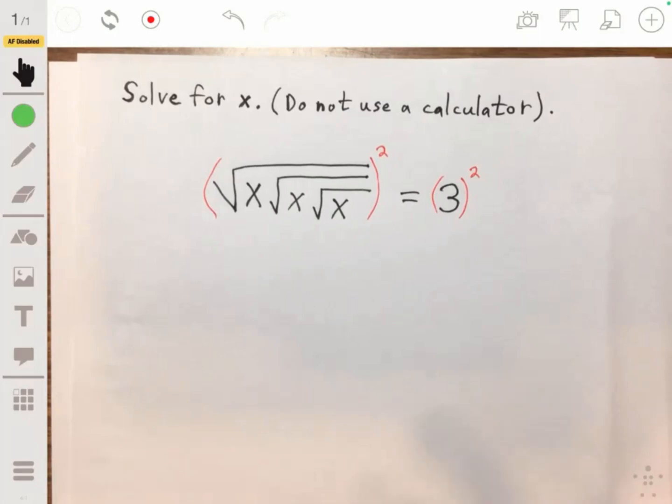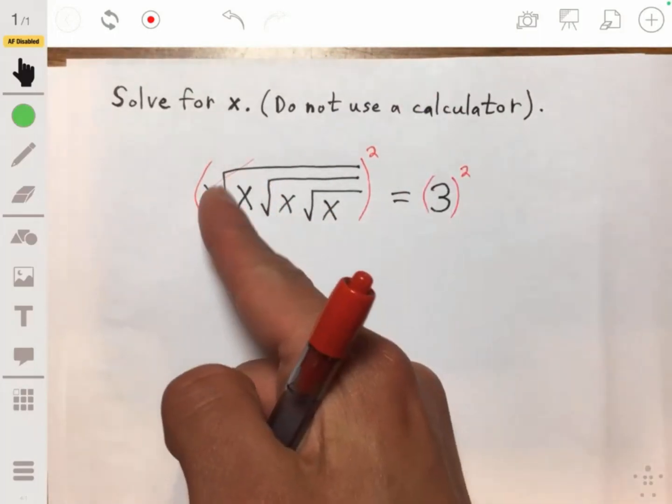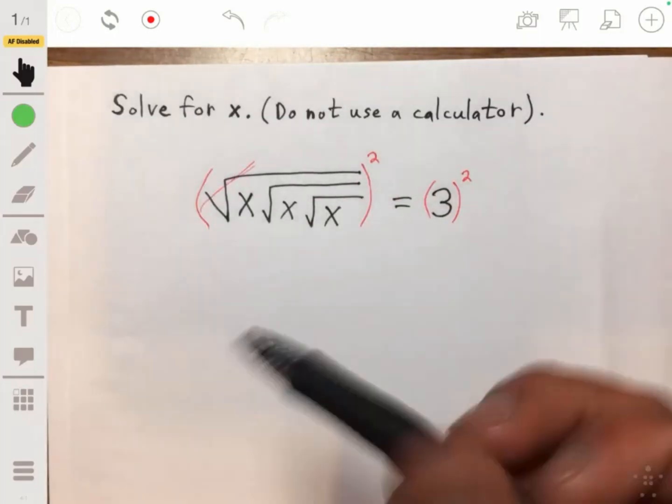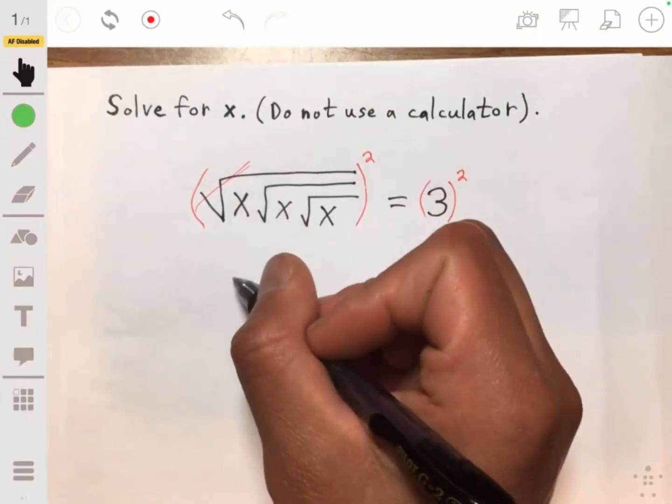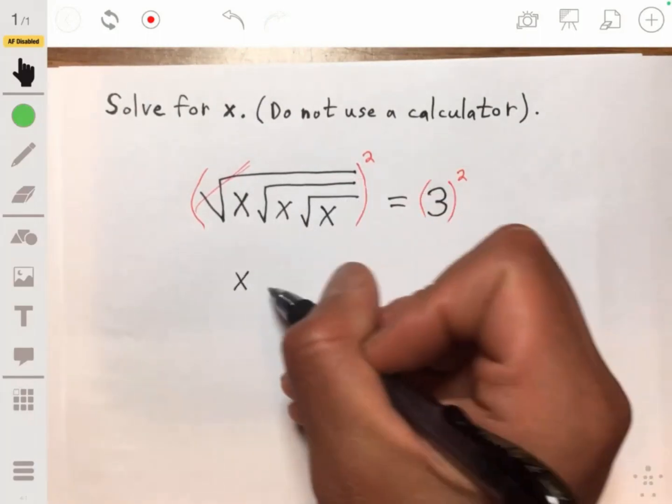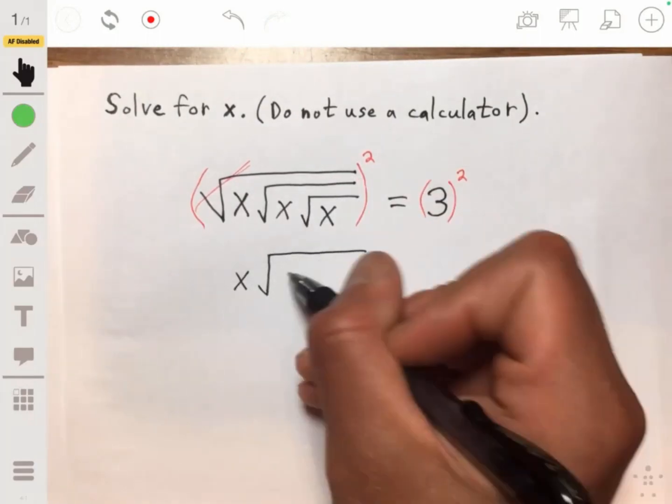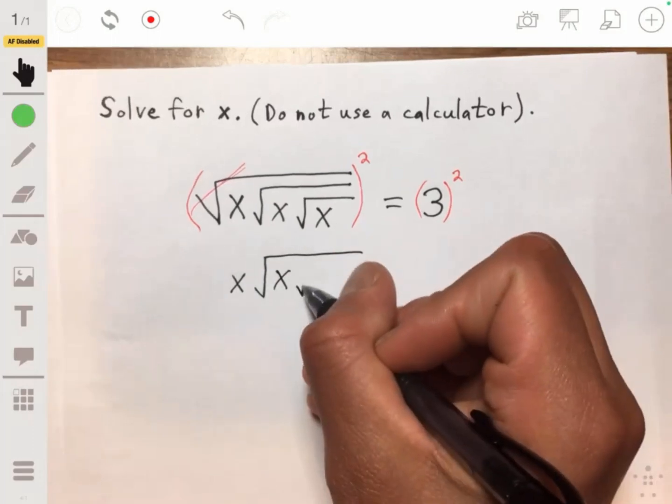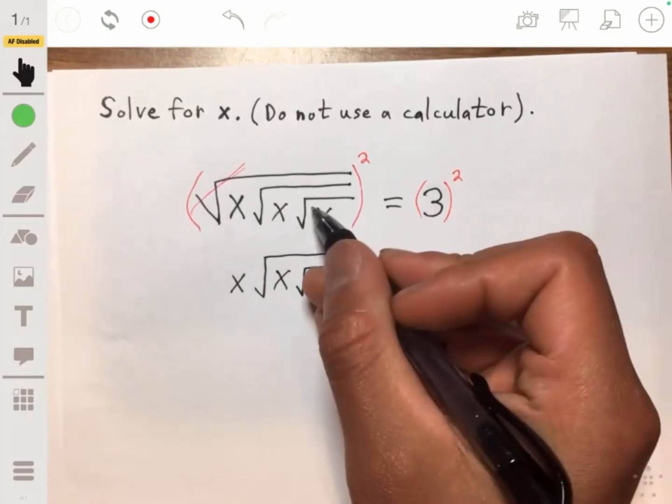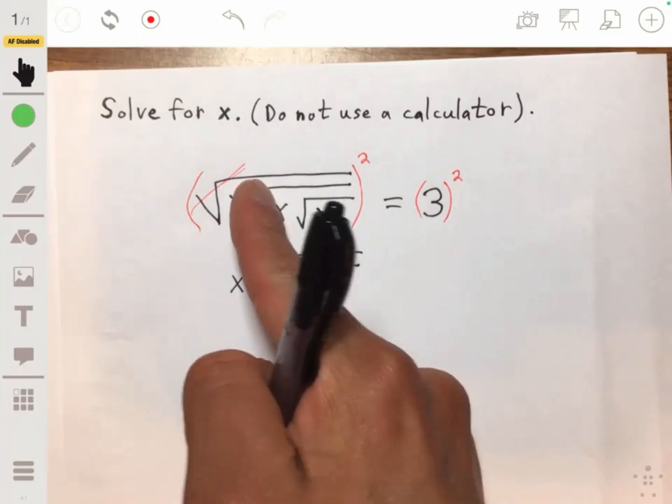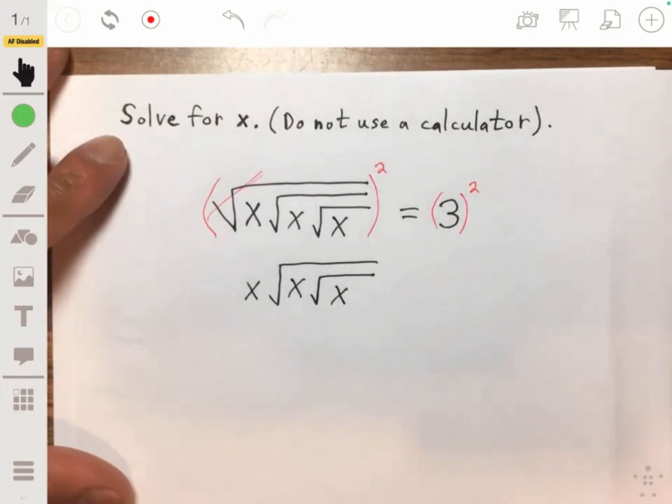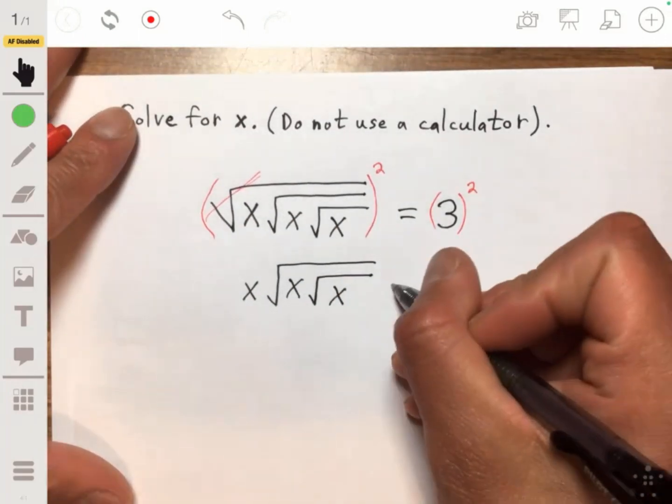That's going to cancel out the square root on this first x term. And so then what we'll have on the left is x times the square root of x. And we still have that square root of x within the second square root that we originally had. And this will be equal to 3 squared.